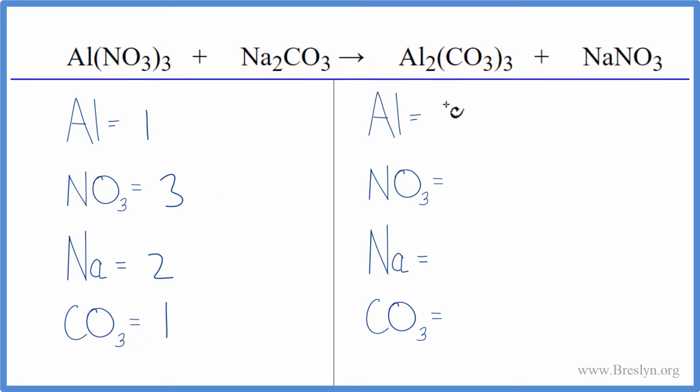On the product side, we have two aluminums, nitrates, we have one of those, we have one sodium, and then carbonate, we have one times the three, so we have three carbonates. So that simplifies things a lot, we don't have to count all these individual oxygens up, it gets kind of messy.